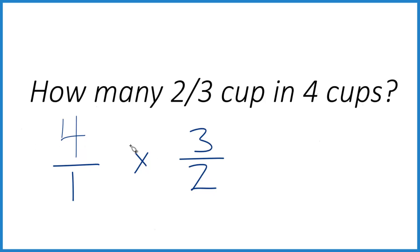Because when we multiply fractions, we multiply the numerators, then the denominators. Four times three is twelve. One times two is two. And twelve divided by two, that equals six.